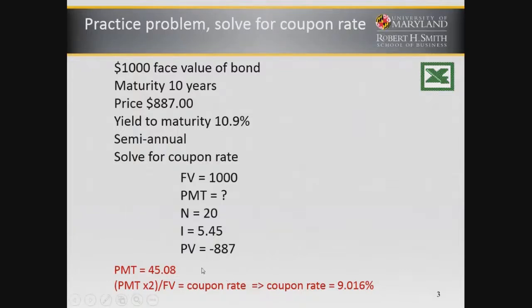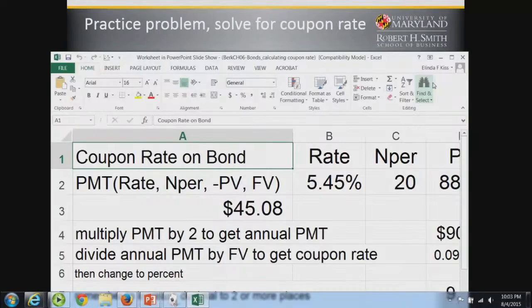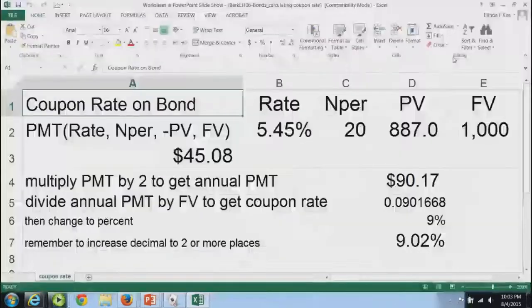I solved for this both with the financial calculator and in Excel. I got $45.08. I multiplied that payment by 2 and divided by the face value of the bond to get a coupon rate of 9.016%. You can see this in Excel, which I worked through here for you.